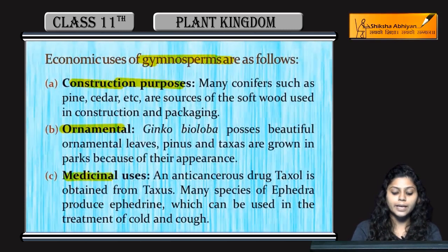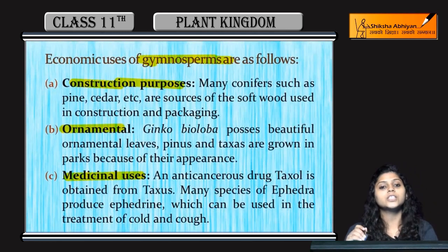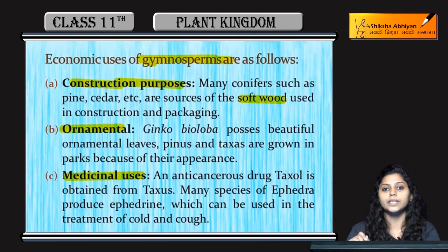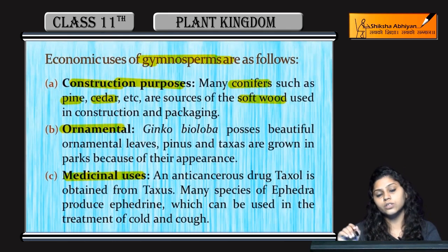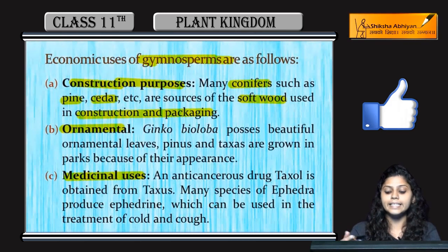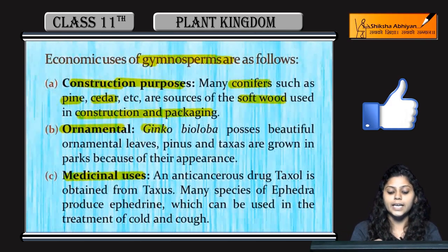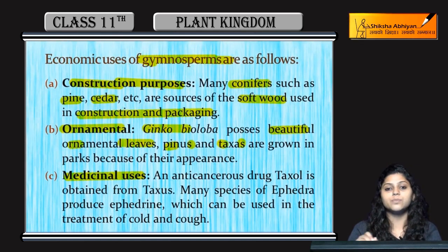Gymnosperms also have ornamental importance. Many conifers such as pine and cedar are used for construction and packaging of materials as a softwood source. They are very beautiful, which is why ornamental importance is high. For example, Ginkgo biloba has very beautiful ornamental leaves. Pine and taxus are grown in parks because their appearance is very appealing.